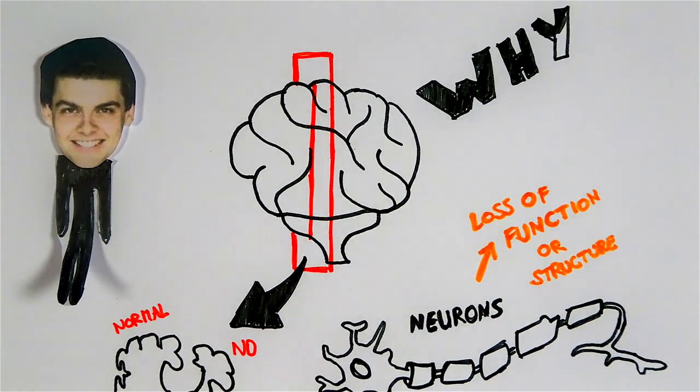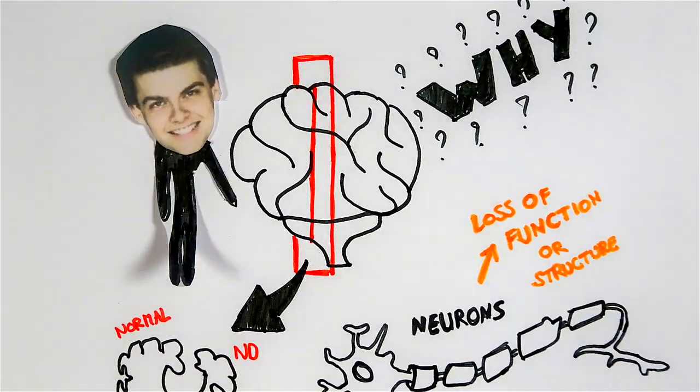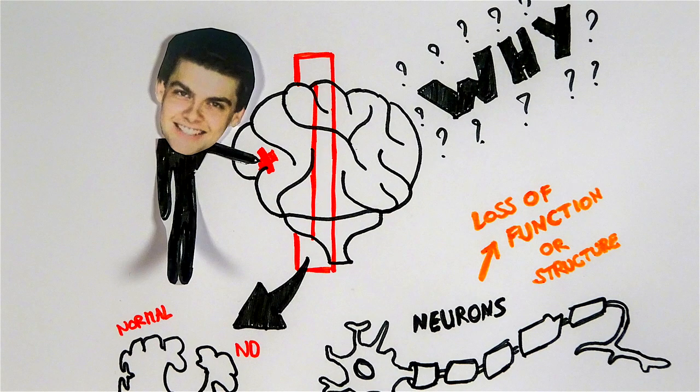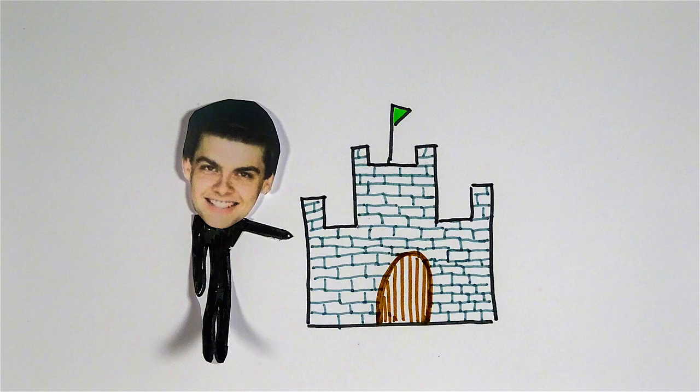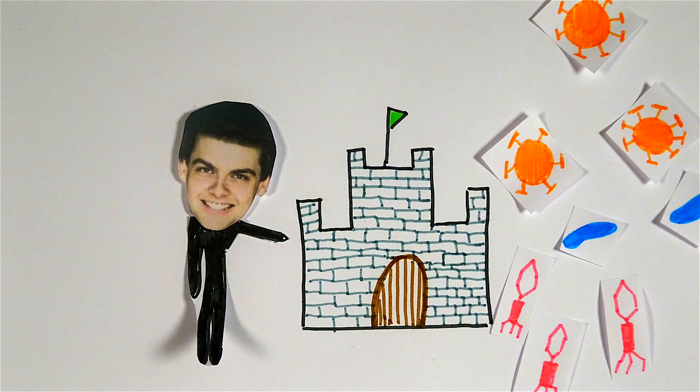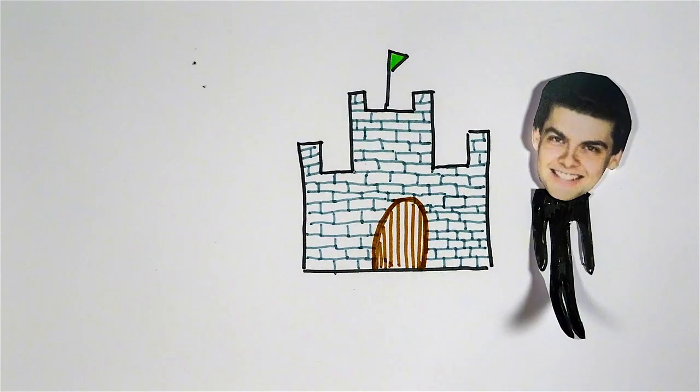But why is this happening? And why can't we researchers simply take a look inside the brain to see how these diseases happen? Actually, it's not completely our fault or anything like that. Because our brain is like a castle. It is well protecting us from foreign invaders like pathogens. But when we researchers want to take a look inside when something goes wrong, we also cannot get inside.